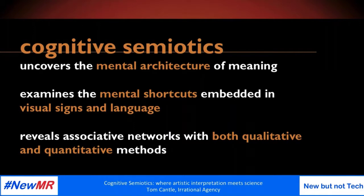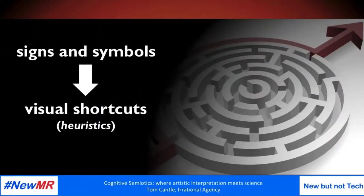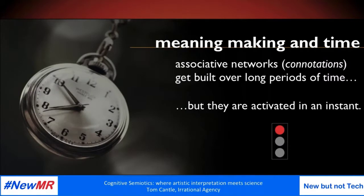Cognitive semiotics helps us uncover the mental architecture of meaning by examining the mental shortcuts embedded in signs and language. Looking at things with this lens, the signs and symbols in semiotics become the visual shortcuts that help us navigate the world around us. These can be called heuristics — the mental shortcuts which help us deal with the overwhelming amount of information that comes at us on a daily basis. The mental architecture behind these heuristics tends to be rooted in your childhood. You see a red traffic light, you know from an early age it means stop. But mental meaning continues — a red traffic light could mean a red light for a race if you're an F1 fan. All of these things take a lifetime to build an associative network, but they're activated in instant thinking fast.